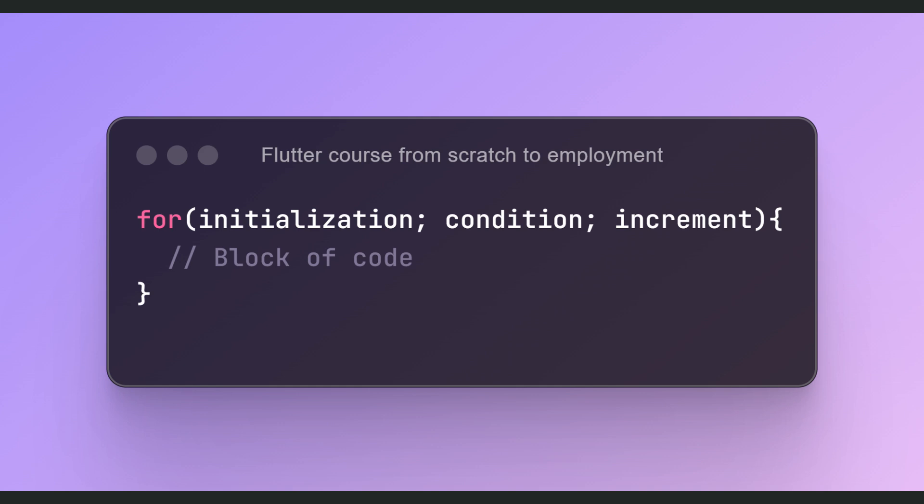The for loop in Dart has the following syntax. Let's examine each part individually. Initialization: here we set the initial values of variables. This block is executed only once before the loop starts.